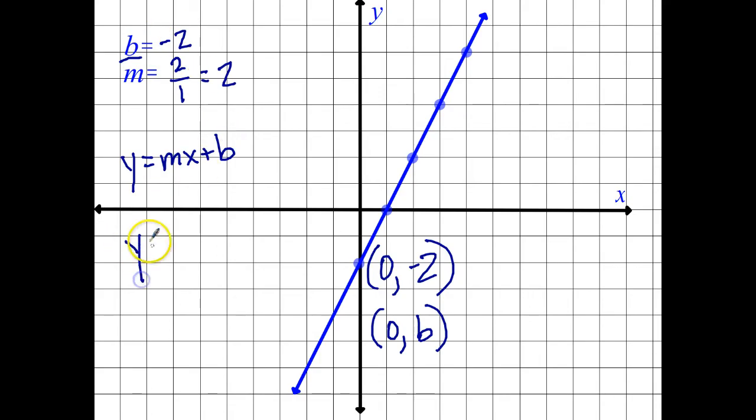You basically plug in the slope here for m, and you plug in the y-intercept here. So this becomes y equals, m is 2, 2x, and my b is, you could write it as plus negative 2. And then the nice way that you'll see it all the time is 2x minus 2. And there you go. There you have it. So just by looking at this line, you can look and say, intercept negative 2, slope is 2. This is my equation.